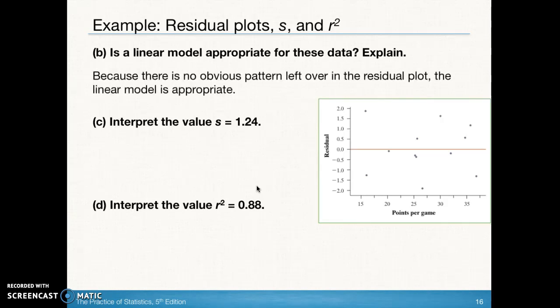The next part of the question says to interpret the value s, the standard deviation of the residuals being 1.24. This is the typical error. When we use a regression line to predict the number of wins from the number of points per game, we expect our prediction to be off by about 1.24 wins on average.